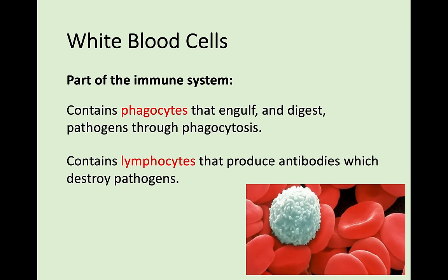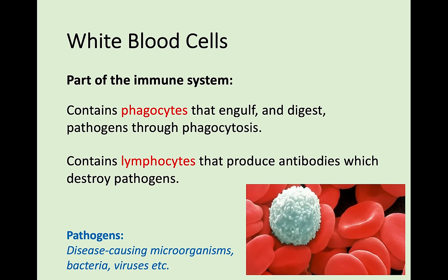The second type white blood cells have are lymphocytes. Lymphocytes effectively do the same job - they destroy pathogens as well. But instead of phagocytosis or engulfing them, what they do is produce antibodies, and these antibodies go and destroy pathogens. Pathogens are disease-causing microorganisms such as bacteria or viruses that can cause harm to you.